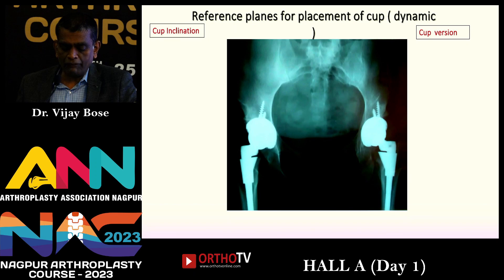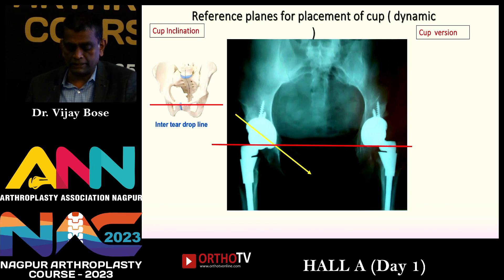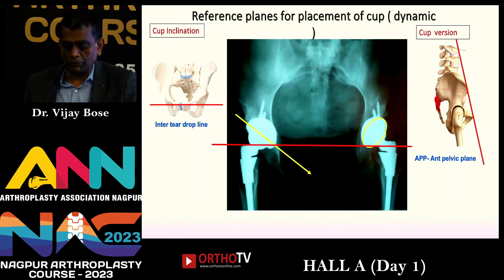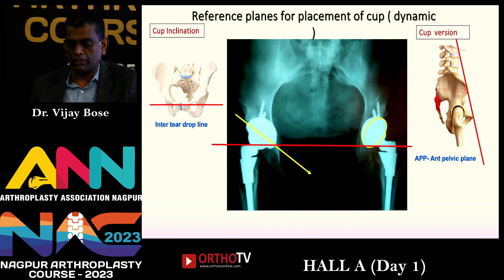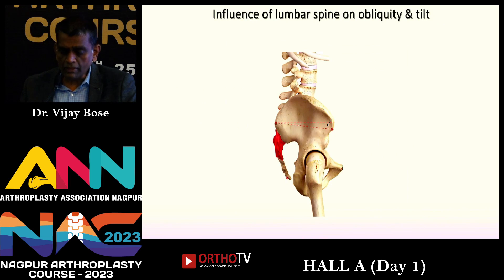For the dynamic parameters, cup inclination uses the inter-teardrop line as the reference, which I've used for years. Version is difficult to assess on the AP film and is always measured in relation to the anterior pelvic plane — the plane formed by joining the pubic symphysis to the two anterior superior iliac spines — giving us the so-called 20 degrees to the anterior pelvic plane.